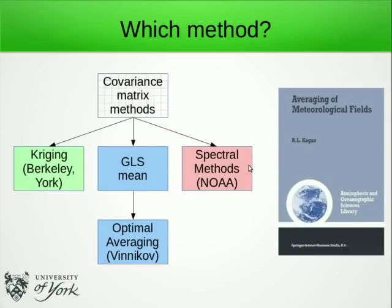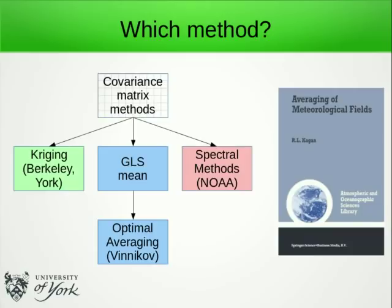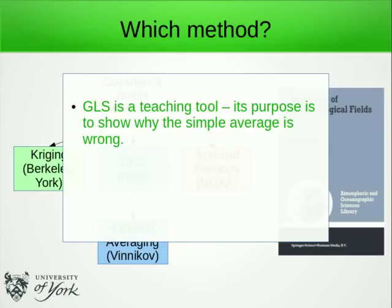Covariance matrix methods have also influenced work at NOAA in their spectral methods, and are used in Kriging methods — for example, the Berkeley and York reconstructions. Under certain simplifications, Kriging, GLS, and optimal averaging all give the same results. However, that involves assuming the earth has no geomorphology. In practice it's better to use more sophisticated methods that can take geomorphology into account. The Berkeley and York reconstructions both allow different behaviour for land and oceans. We are not advocating that everyone use GLS to average temperature fields — GLS is a teaching tool whose purpose is to show why the simple average is wrong and give a good conceptual understanding of the underlying methods.